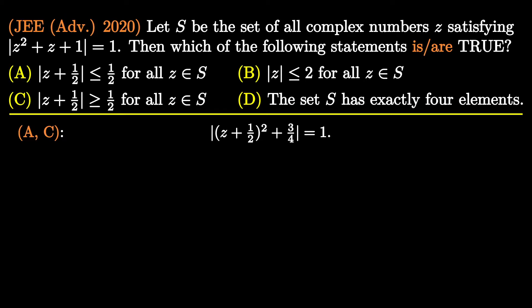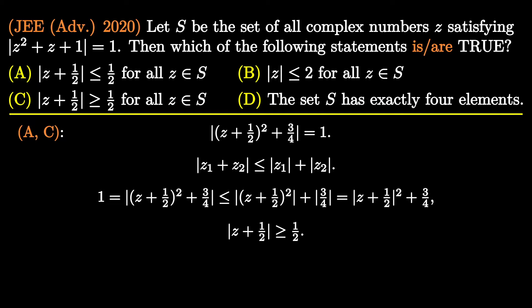Is there any way to get some inequality by using this relation? The answer is yes. We can use the triangle inequality for complex numbers, which gives |z₁ + z₂| ≤ |z₁| + |z₂| for any two complex numbers z₁ and z₂. By using this inequality, we get |z + 1/2| ≥ 1/2, which proves option C correct.